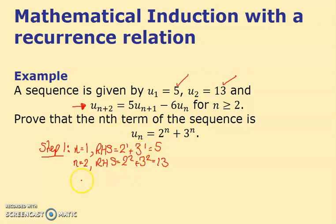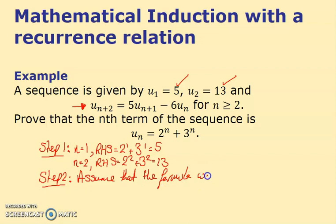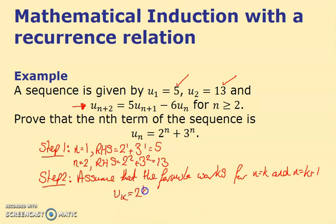We're happy with that, so we can move on to step 2, which is a slight adjustment. We have to assume that the formula works for both n = k and n = k+1. So we write that u_k = 2^k + 3^k, and we also have to assume that u_(k+1) = 2^(k+1) + 3^(k+1). That's because our recurrence involves u_(n+2), so we need to go one step further.